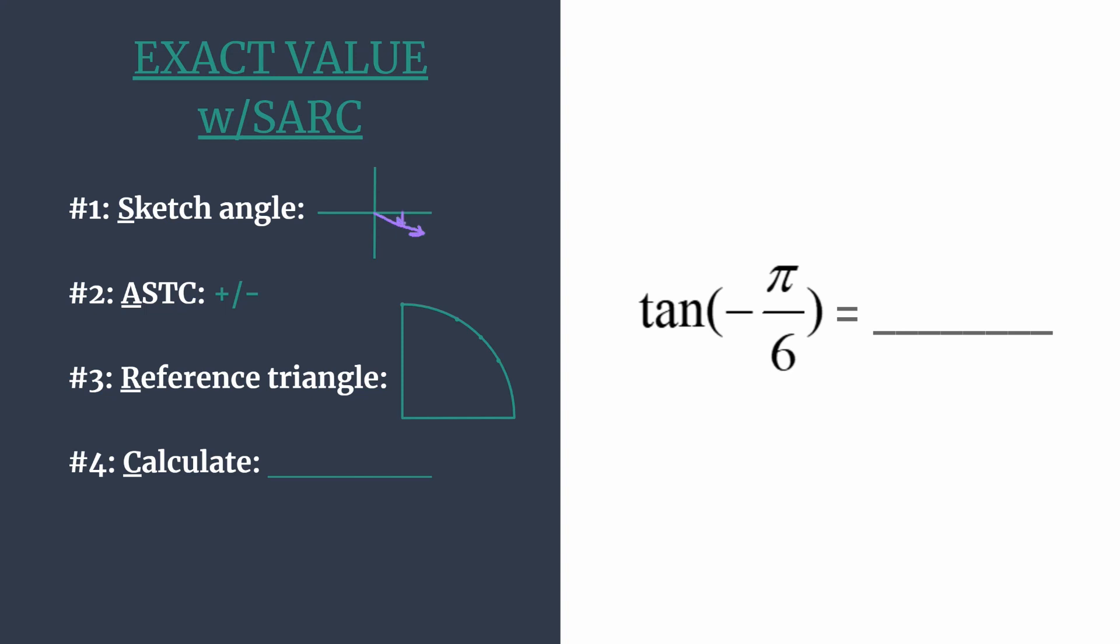If you wanted to find a coterminal angle instead of dealing with the negative angle, you can find an angle coterminal to negative π over 6 by adding 2π, which is a full rotation. Instead of writing 2π, we write 12π over 6, which has a common denominator. So that coterminal angle would be 11π over 6.